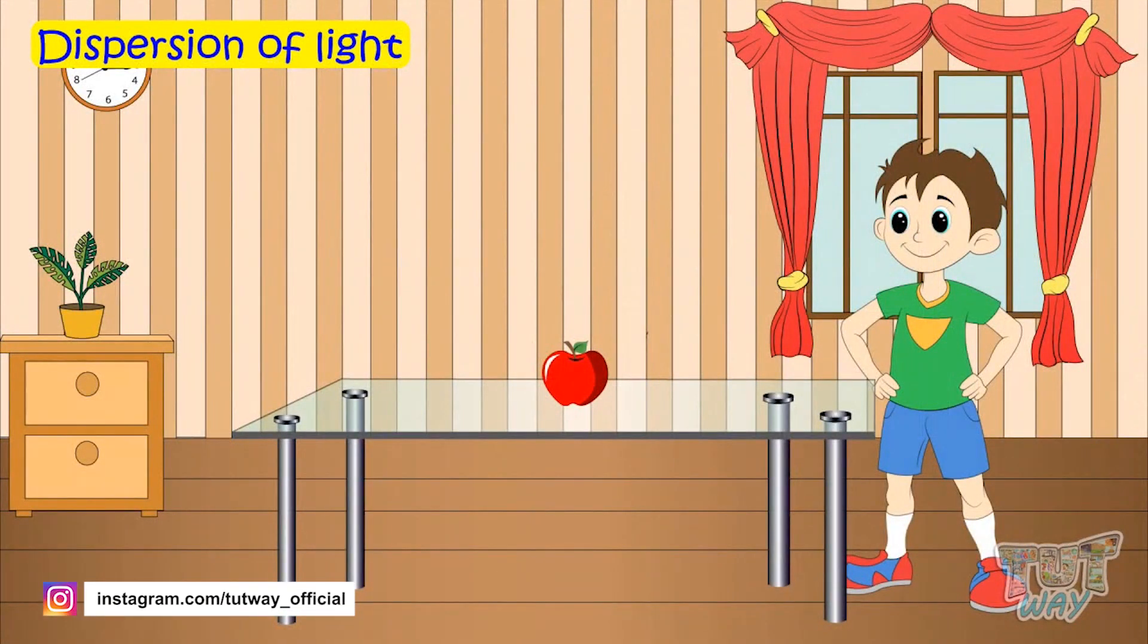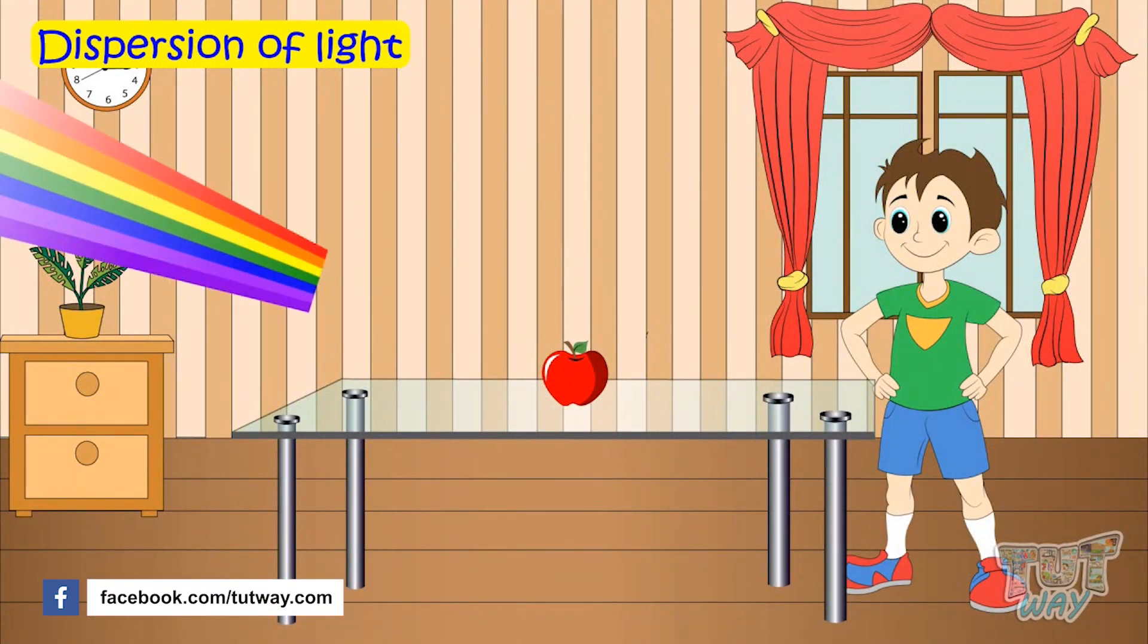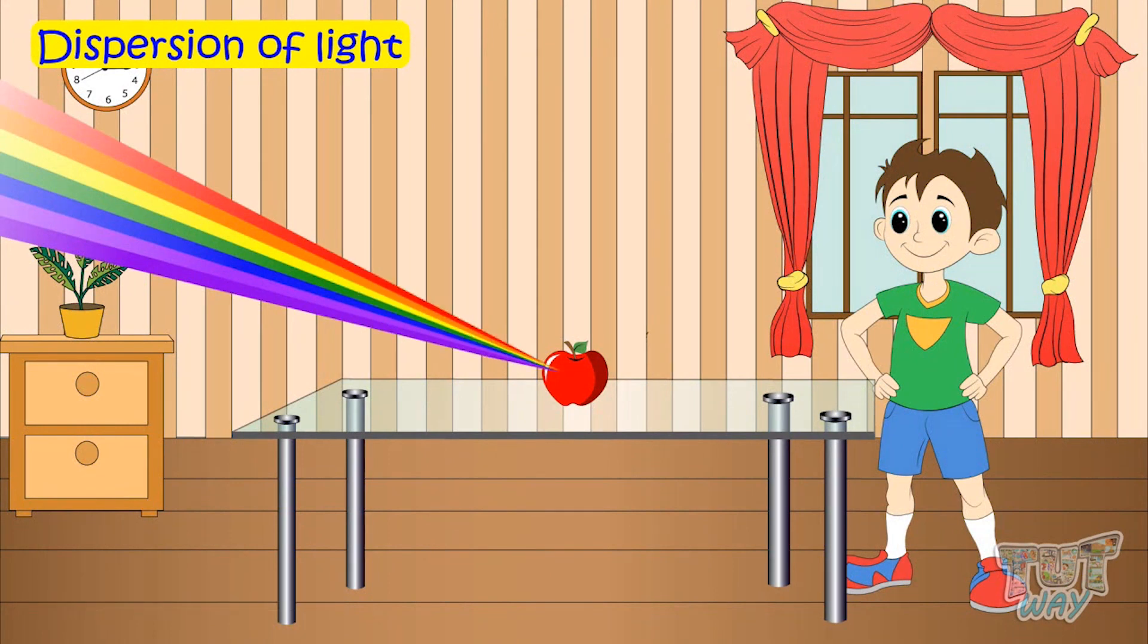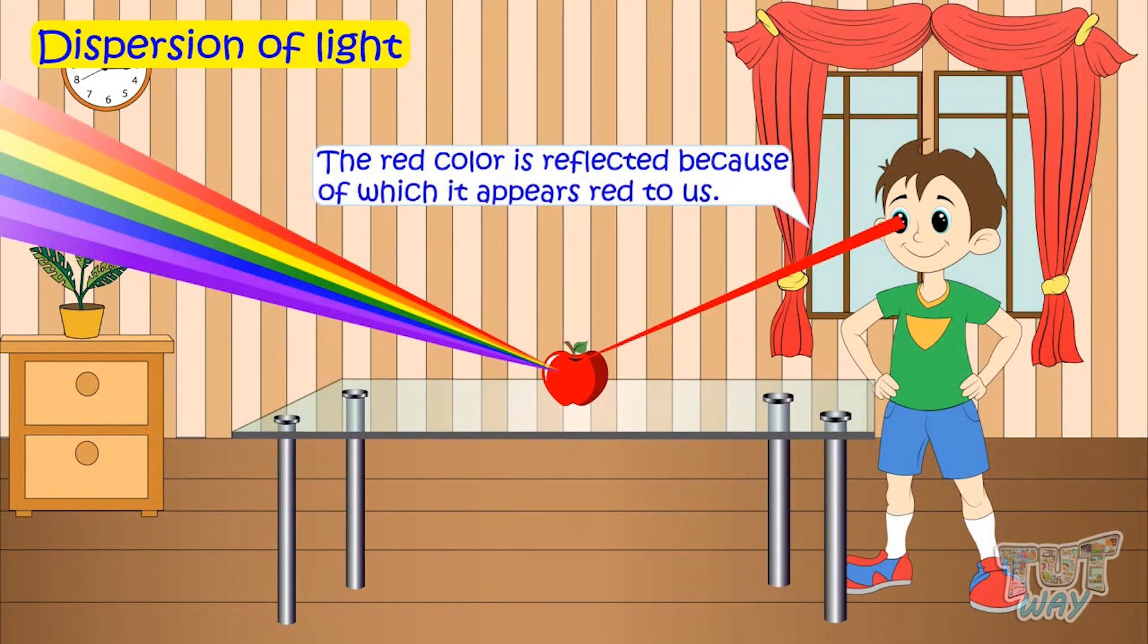Whenever light falls on an object, for instance, a red object, all other colors of the light are absorbed by the object and only the red color portion of the light is reflected back. That is why the object appears red to us.